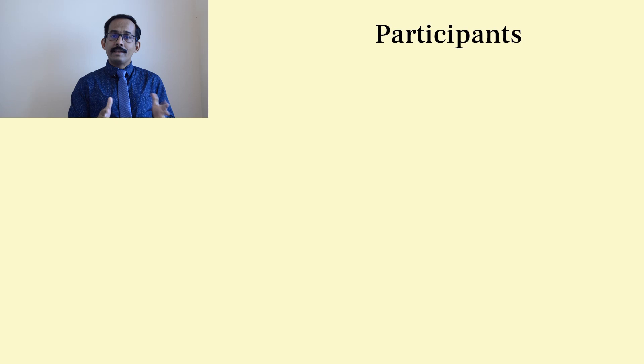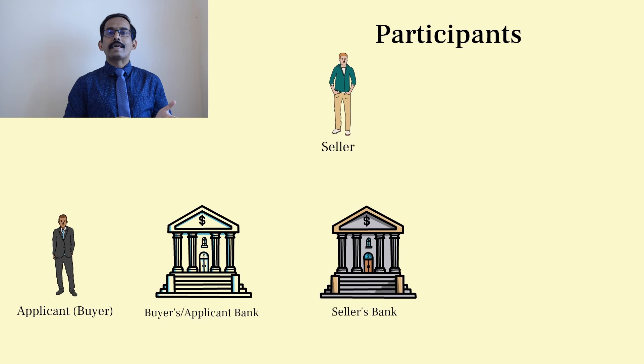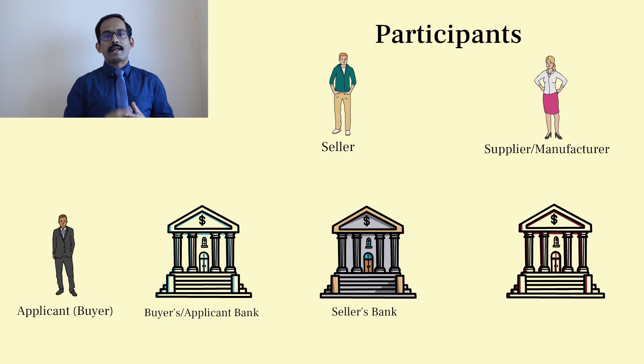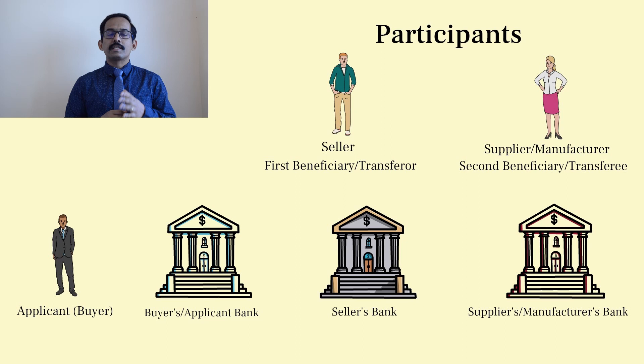Normally in an LC there are four participants: the buyer, seller, buyer's bank, and the seller's bank. The buyer is referred to as the applicant and the seller as the beneficiary. In a transferable LC, there will be two more participants — the supplier or manufacturer to whom the LC is being transferred and their respective bank. The seller who transfers the LC is referred to as the transferor or first beneficiary, and the supplier or manufacturer to whom the LC is transferred is referred to as the transferee or second beneficiary. There is no restriction on the number of suppliers to whom the LC can be transferred.